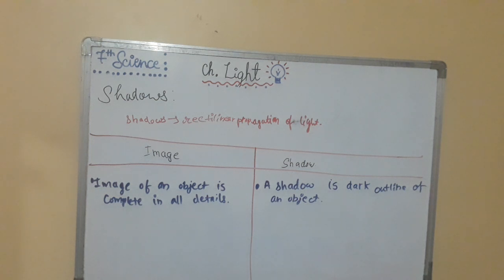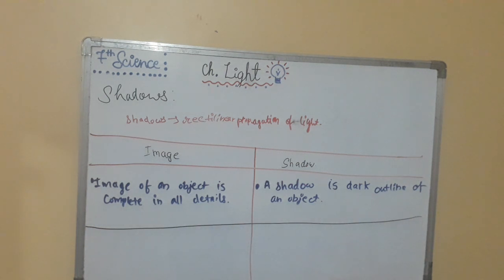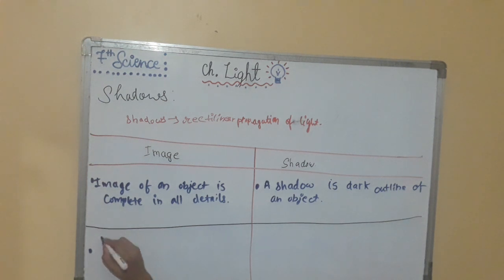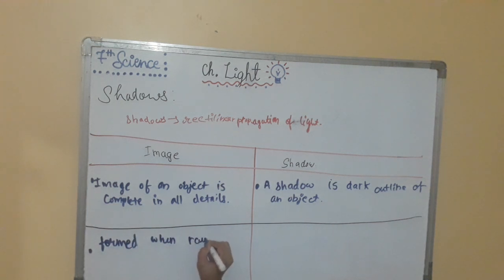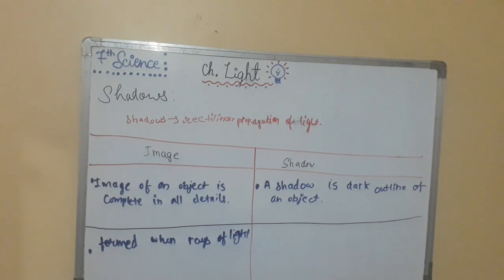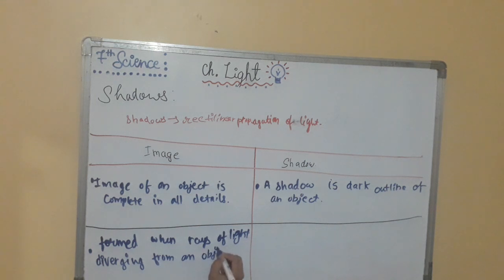The second point: an image is formed when rays of light diverge from an object and converge at the screen.